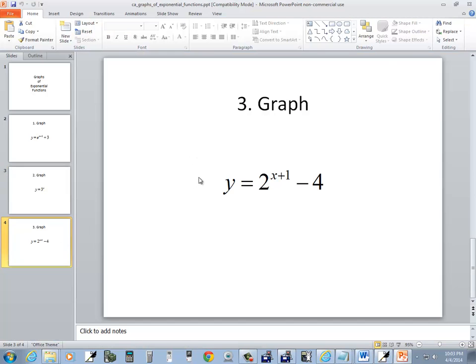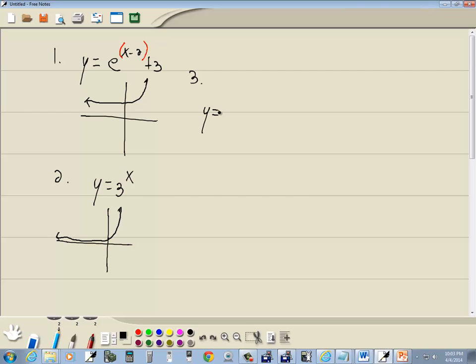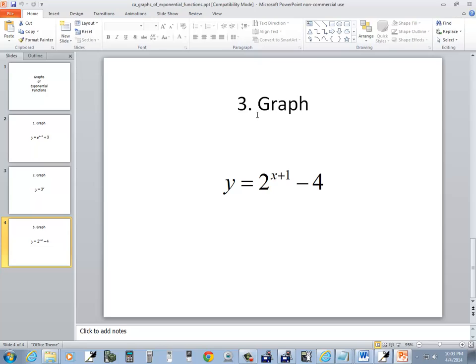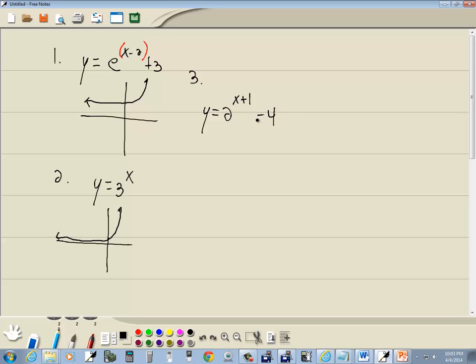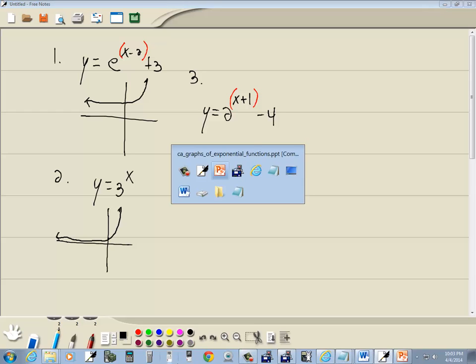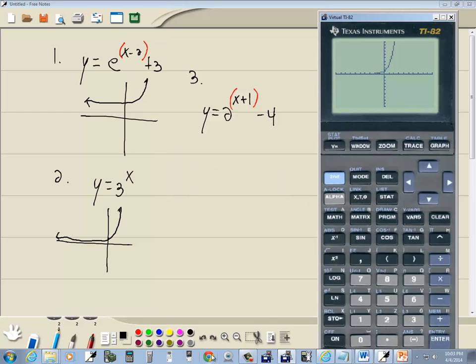Okay, let's look at our last example. We've got y is equal to 2 to the x plus 1 minus 4. And remember what I've been saying. If you've got more than a single number or a single variable in your exponent, you have to put parentheses around it. So as we plug this one in, we have to put parentheses around the x plus 1. Other than that, we just type it in as we see it.